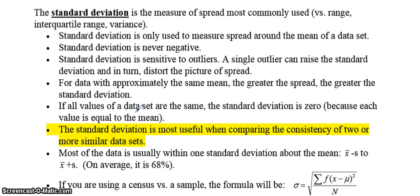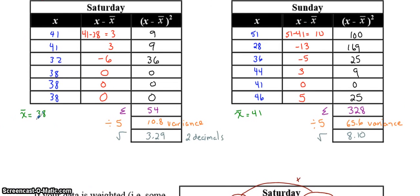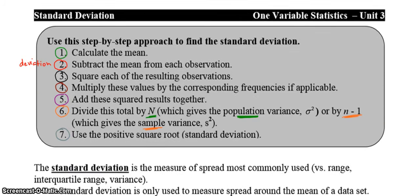If all values of a data set are the same, the standard deviation is zero because each value is equal to the mean. The standard deviation is most useful when comparing the consistency of two or more similar data sets. Most of the data is usually within one standard deviation of the mean. What that means is, if your mean is 38 and your standard deviation is approximately 3, then most of the data would be between 35 and 40. Not always, but usually. And you can see here, that's almost all of the data is between 35 and 41, and you get 35 and 41 from subtracting 3 from the mean and adding 3 from the mean.